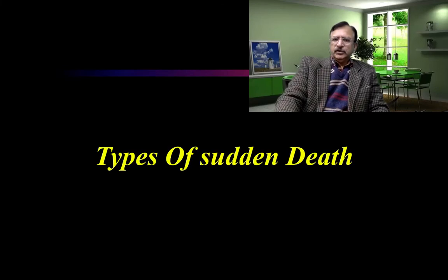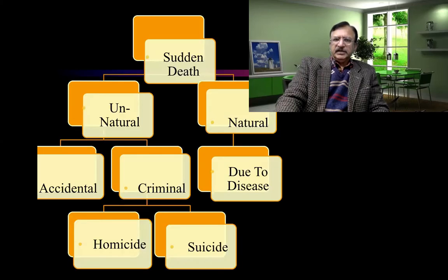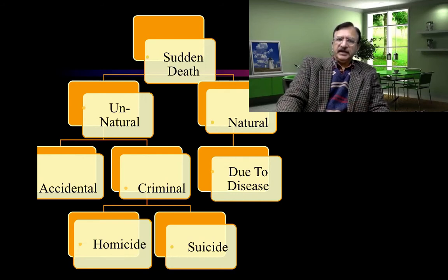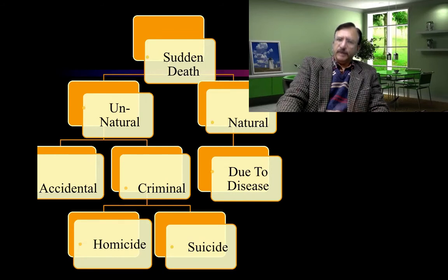Talking about the types of sudden death: sudden death may be natural or unnatural. Natural causes are usually due to disease of certain systems within the body. Unnatural causes may be either accidental or criminal, which may be homicide, suicide, or poisoning.